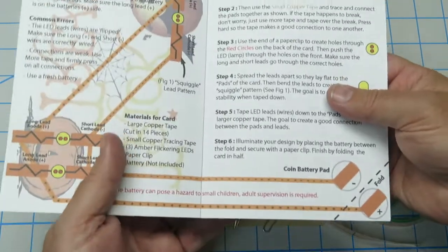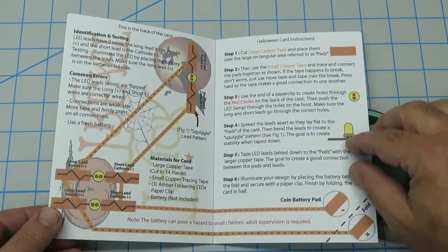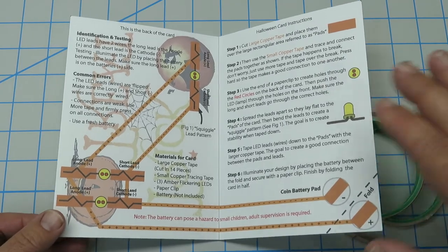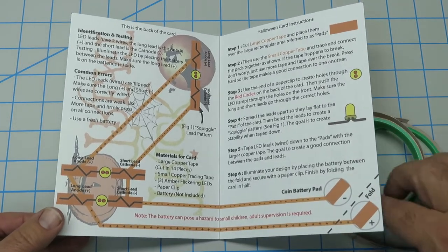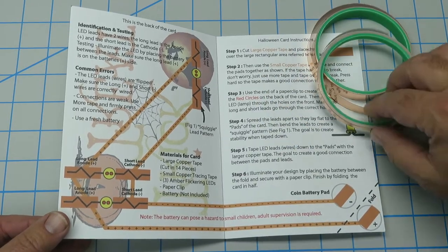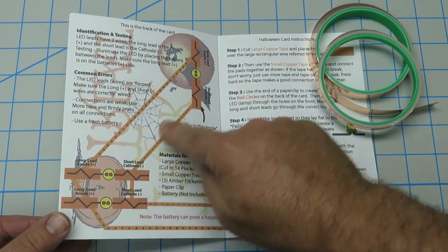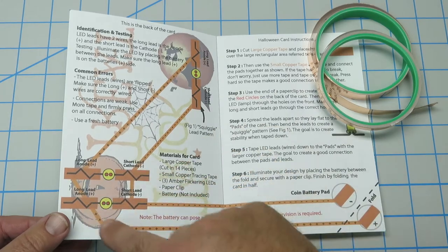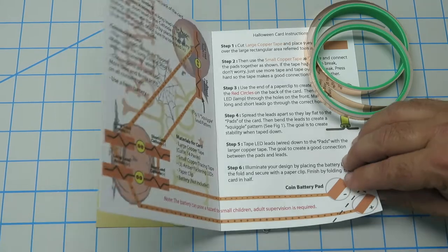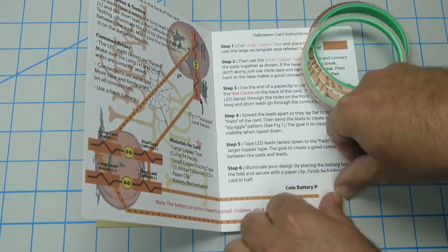Inside of the card are the instructions of how to put this together. Now real quickly, just as an overview, what basically happens is we're going to take this flexible copper tape and run this circuit around to these areas. We're going to hook up a coin battery there, and then we're going to fold this over to connect the battery.